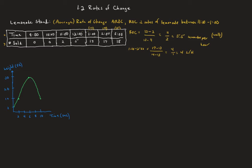Now let's jump to the graphical example. Our function is given by the green graph — height on the vertical axis in feet, time on the horizontal axis in seconds. Let's find the rate of change from time 0 to time 2 seconds. We'll compute the height at time 2 minus the height at time 0, all over 2 minus 0.